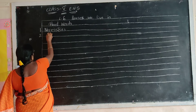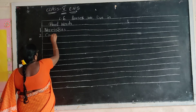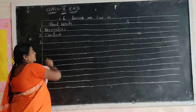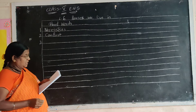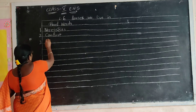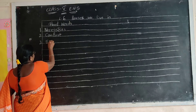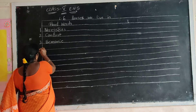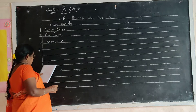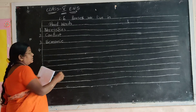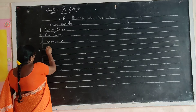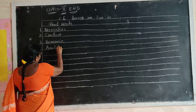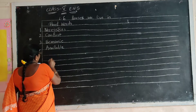Put two in the margin. Comfort. C-O-M-F-O-R-T. Comfort. Third one: Economic. E-C-O-N-O-M-I-C. Economic. Fourth one: Available. A-V-A-I-L-A-B-L-E. Available.